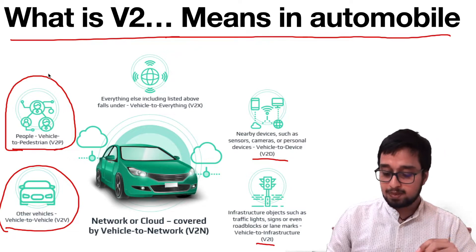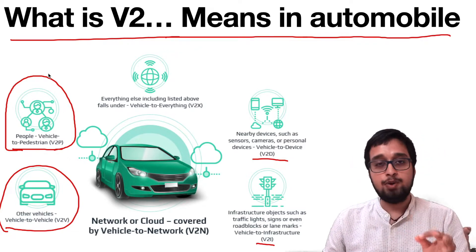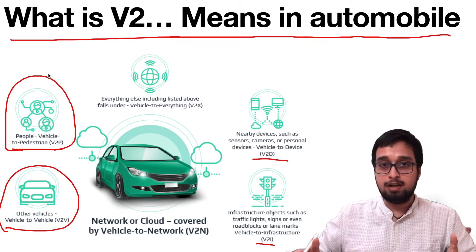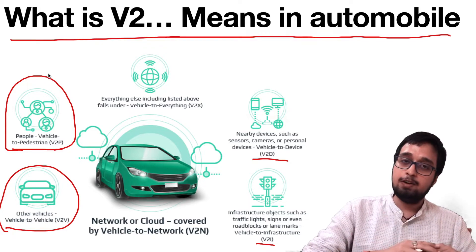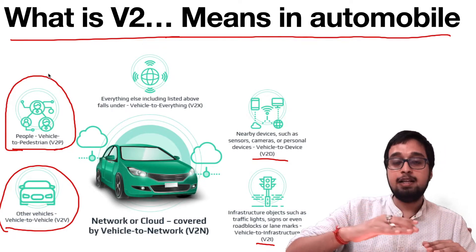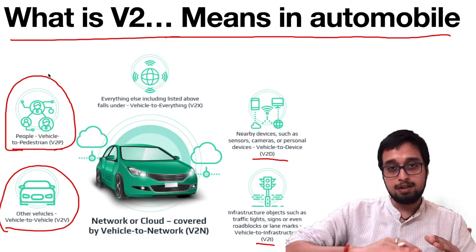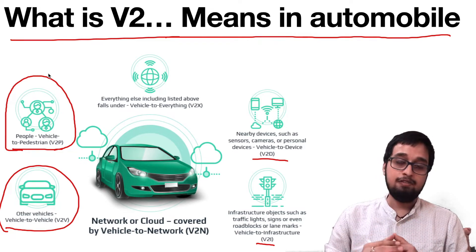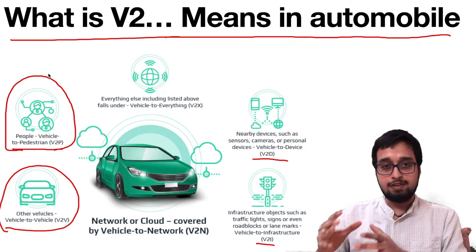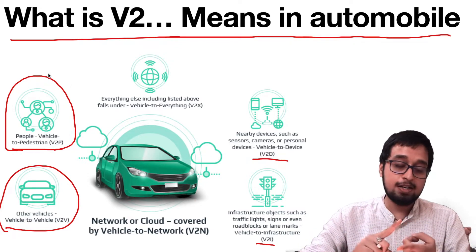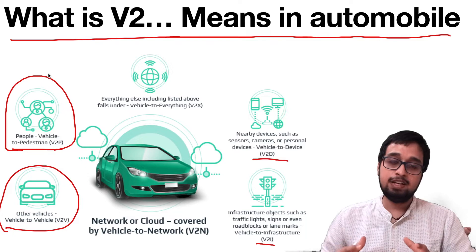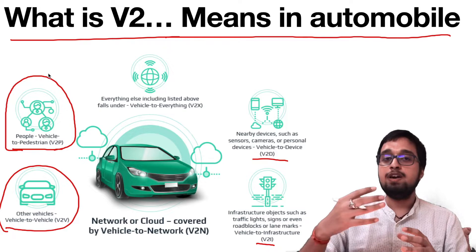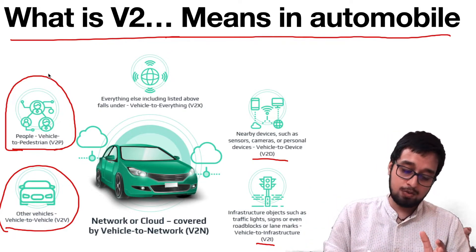The last one is V2i. V2i means that your vehicle is communicating with infrastructure being developed in this decade from 2021 to 2030, and these things are developing at a very good pace. Developed countries are already at the final stage, while developing countries are at the initial phases. If you're talking about V2i infrastructure, your vehicle would be communicating with traffic lights, roadblocks, and lane markings, using these to predict what your vehicle's next step should be.